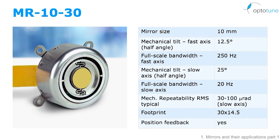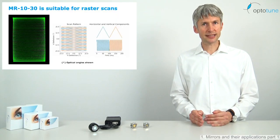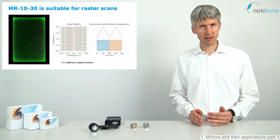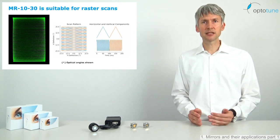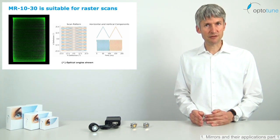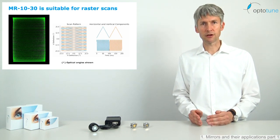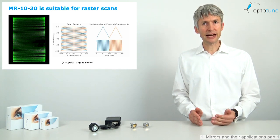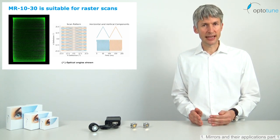For raster scan applications, a frequency higher than 20 Hz is required for the fast axis. The MR-10-30 offers 250 Hz sine with 50 degree optical field of view on the fast axis and 10 Hz triangular with 100 degrees optical field of view on the slow axis. In this picture, we see the projected scan pattern of a laser hitting the MR-10-30. The resonant fast axis is operated in open loop sine at its fixed resonance frequency of 250 Hz. The non-resonant slow axis is operated in closed loop at 10 Hz triangular.